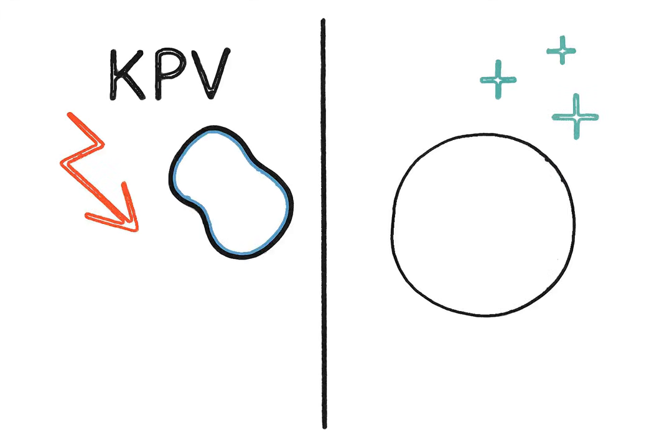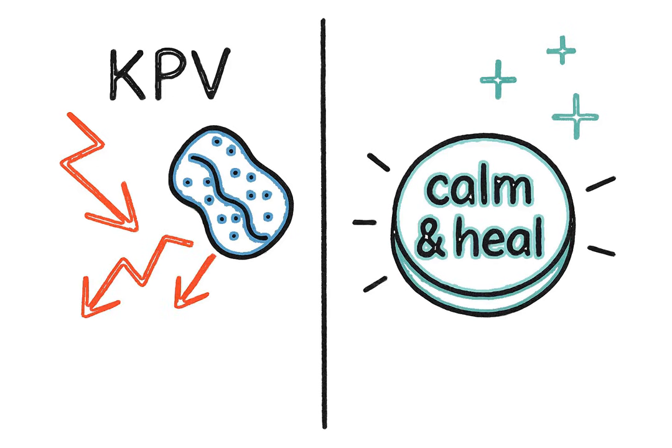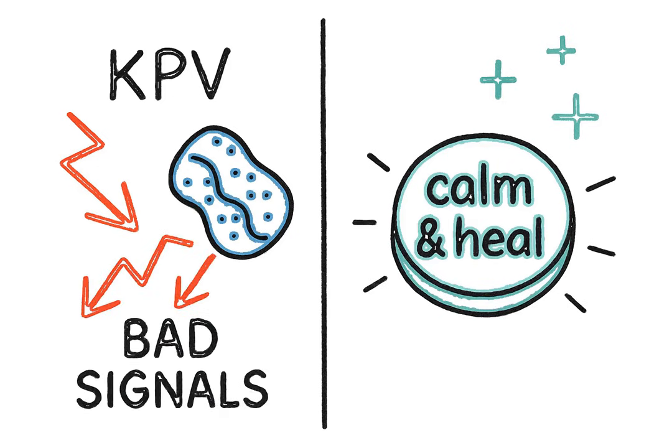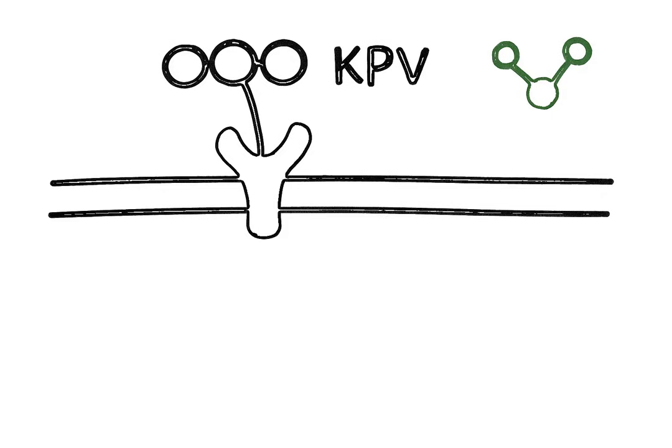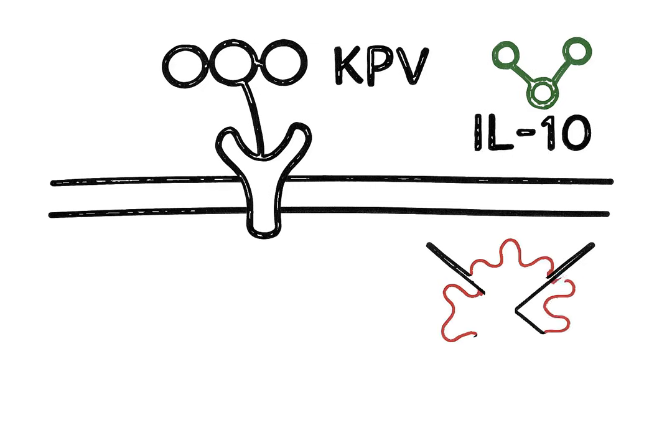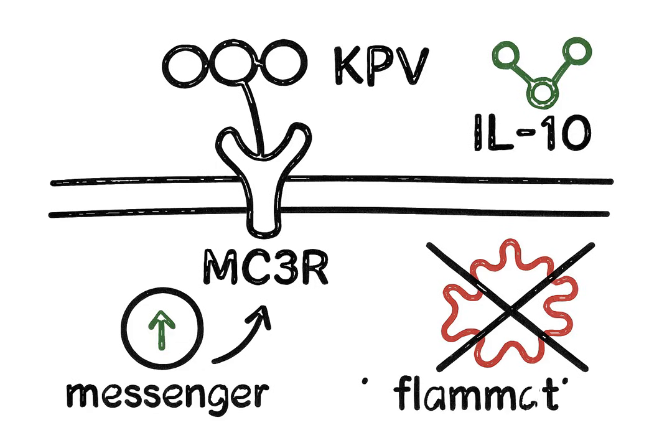But it doesn't just stop the bad signals. KPV also actively promotes the good ones. Think of it as pressing a calm and heal button inside your cells. It does this by activating a special receptor called MC3R, found on immune cells, skin cells, and gut cells. When this receptor turns on, it raises levels of a messenger that leads to two positive outcomes. Even more inflammation gets blocked, and your body starts making more healing chemicals like IL-10.